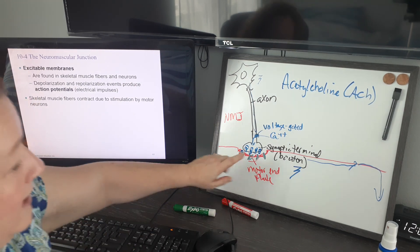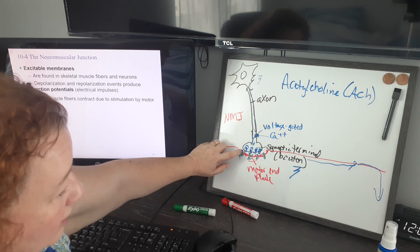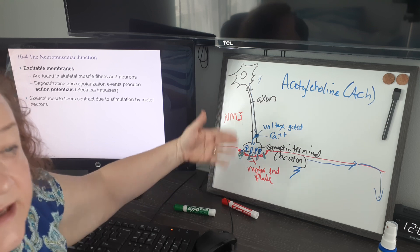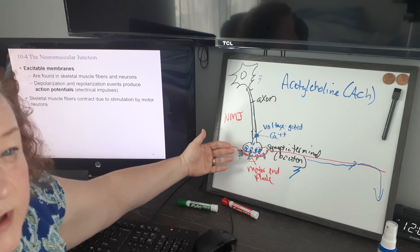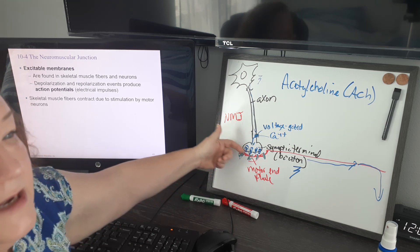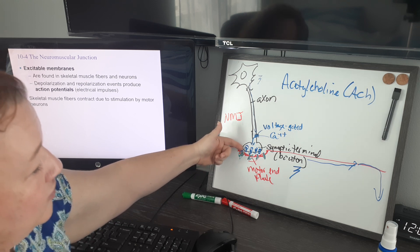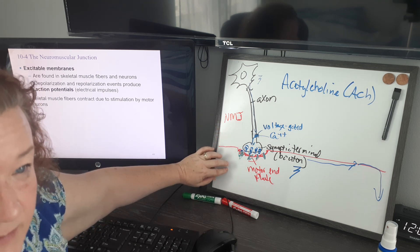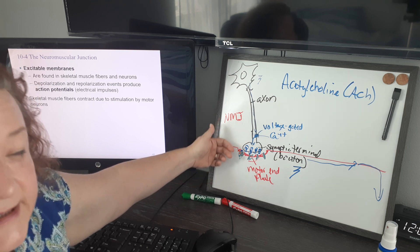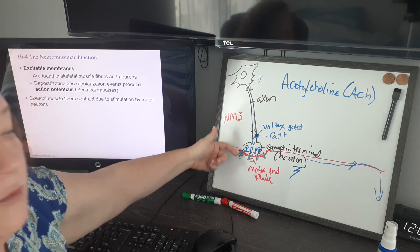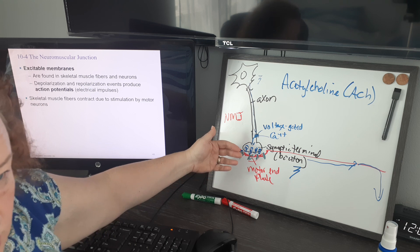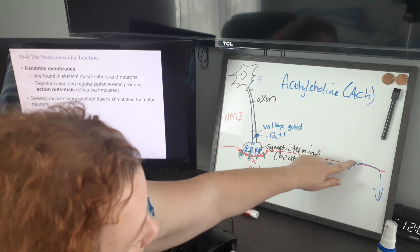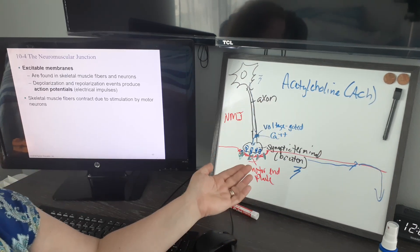The acetylcholine is the ligand. When it binds to the sodium channel, the channel opens. Because the sodium-potassium pump has been pushing lots of sodium out, there's lots of sodium ready to come in. When sodium comes rushing in, it flips the charge of the muscle cell from negative inside to positive, and we create a new action potential that travels down the side of the cell and into the T-tubules.